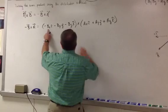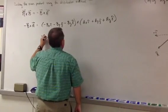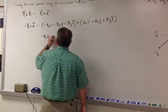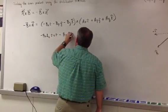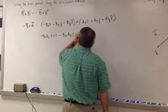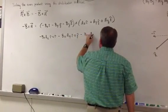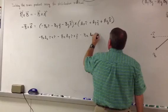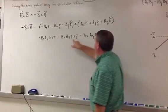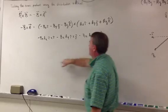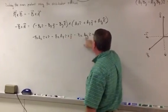Let's multiply negative bx times all three: negative bx·ax (i cross i), minus bx·ay (i cross j), minus bx·az (i cross k). Double-checking: i cross i, i cross j, i cross k — negative bx, negative bx, negative bx — ax, ay, az. Good.